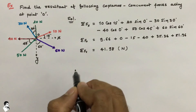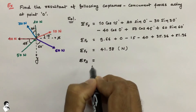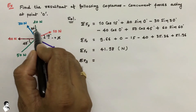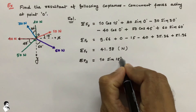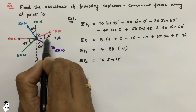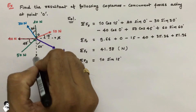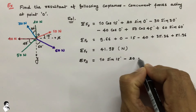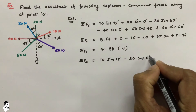In the same way, we now take the Y direction and make a summation of the force components along Y. Starting again with 10 Newton with respect to the Y axis: that is 10 sine 15 degrees. For the 20 Newton force, it goes directly in the minus Y direction, so that is minus 20 cos 0 degrees.